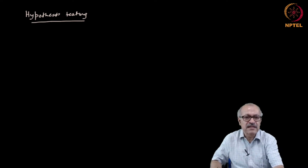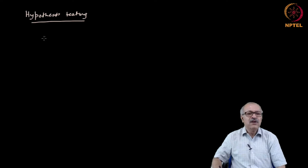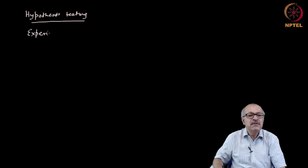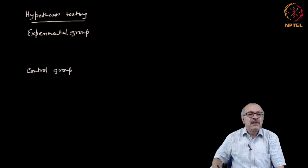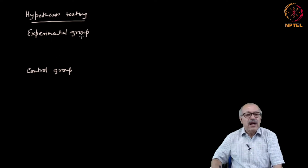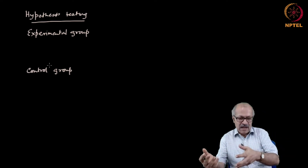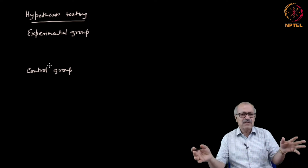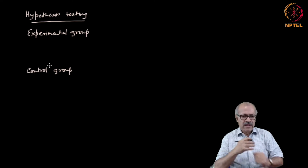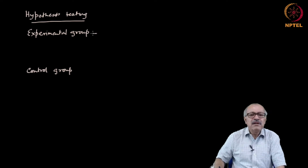We start now with the statistical test. We have obtained data from the experimental group and the control group. Initially we collected samples and then divided them into the experimental group and the control group, but it is not always necessary that the size of the groups be exactly the same. Let us assume the size of the experimental group is n_E and the size of the control group is n_C.